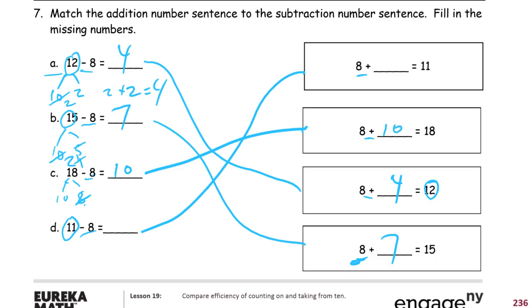And 11 minus 8. This one you can count up. 9, 10, 11. That's 3 numbers. So, 8 plus 3 is 11.